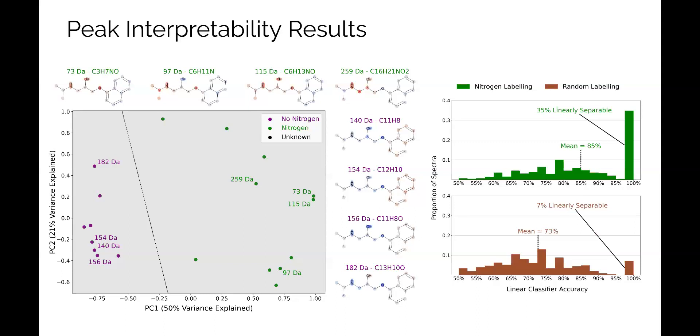Projecting the GI maps for each of these peaks in two dimensions on the left, we noticed that the peaks were clearly linearly separable. More generally, across the entire dataset, we showed that the linear separability of GI maps based on nitrogen presence was statistically significantly higher than random, as indicated by the figure on the right. This suggests that GI maps provide information about which fragments the model thinks are associated with each peak. We also found this pattern holds with other heteroatoms.